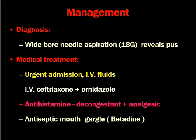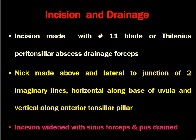When the patient is having peritonsillar abscess, incision and drainage is the main stay of treatment. The incision shall be made with a number 11 blade or with peritonsillar abscess drainage forceps, which acts both as the incision and drainage instrument. The incision is made above and lateral to the junction of two imaginary lines: a horizontal line passing through the base of the uvula and a vertical line along the anterior tonsillar pillar. The incision is widened with sinus forceps to allow drainage. If peritonsillar abscess forceps are available, sinus forceps are not necessary.